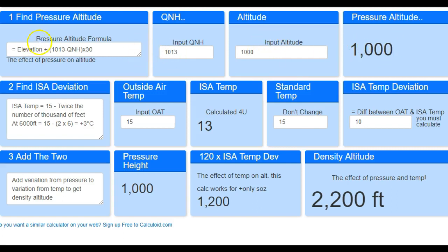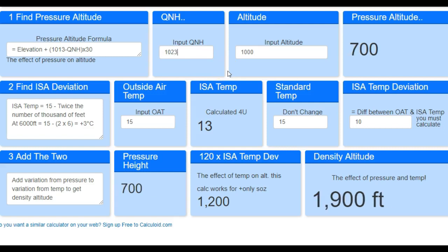Now we don't need to know this formula because watch — let me show you this nifty little trick. And this is why I put this together, so you can have a play. What happens if we change the QNH by 10? So if we go to 1,023, look what happens — the pressure altitude varied by 300 feet.